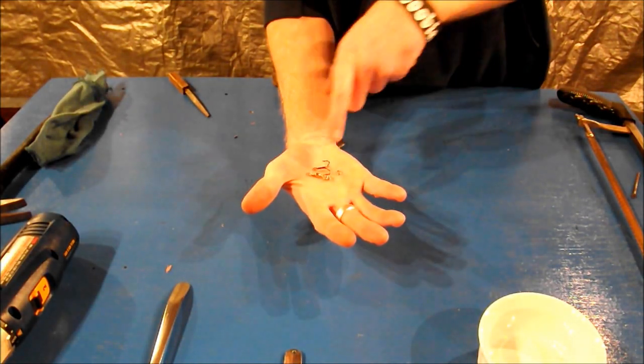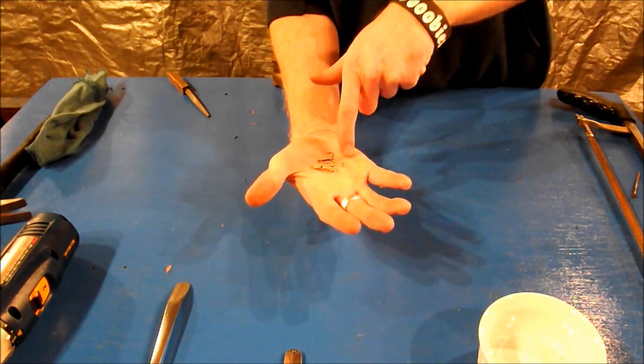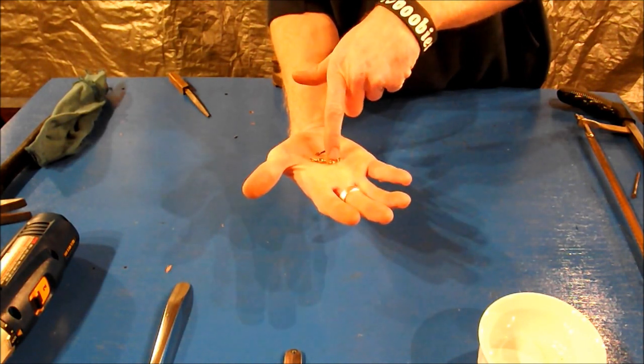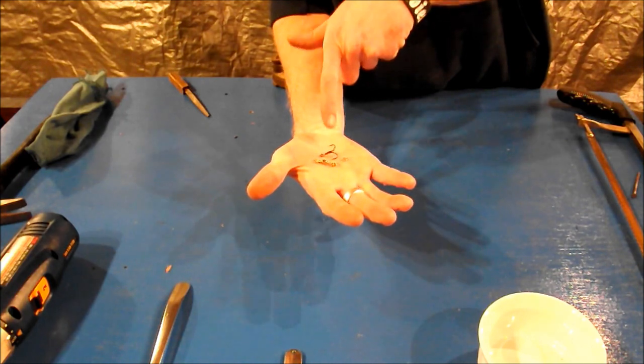To complete your lure, you'll need one swivel, two split rings. You can see I have one already attached to the end of the swivel here, and one treble hook.